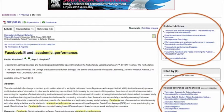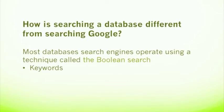But what if you want to research a different topic — one that's not on the top 25 list? In that case, you're actually going to have to search the database. It's important to understand that you don't search a database the way you search using Google — the search engine works differently. Most database search engines operate using some form of Boolean search. If you type a full question like 'Does Facebook use affect academic performance?' into ScienceDirect, you will probably get very strange results, or more likely no results at all.